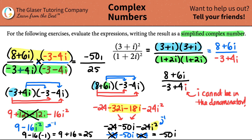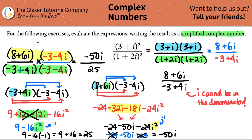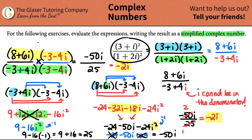That was the numerator. So now I'm down to negative 50i divided by 25. Can we simplify this? Sure - how many times does 25 go into 50? Two times. So this would just be equal to negative 2i. This whole big scary thing just comes down to negative 2 times an imaginary number - negative 2i.